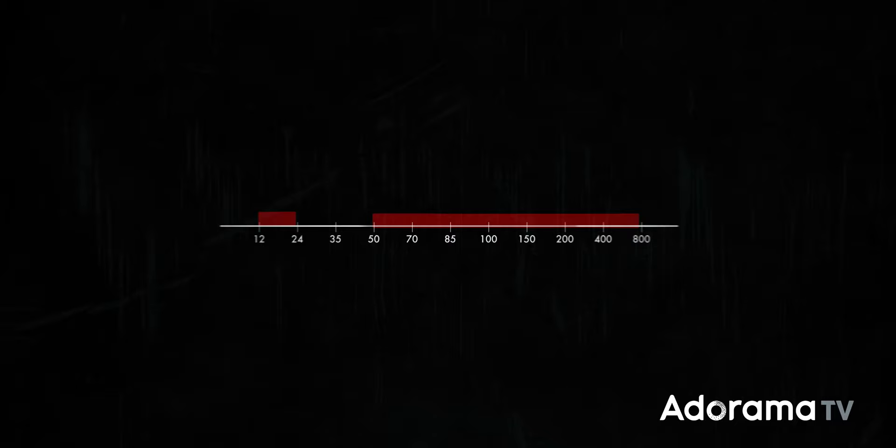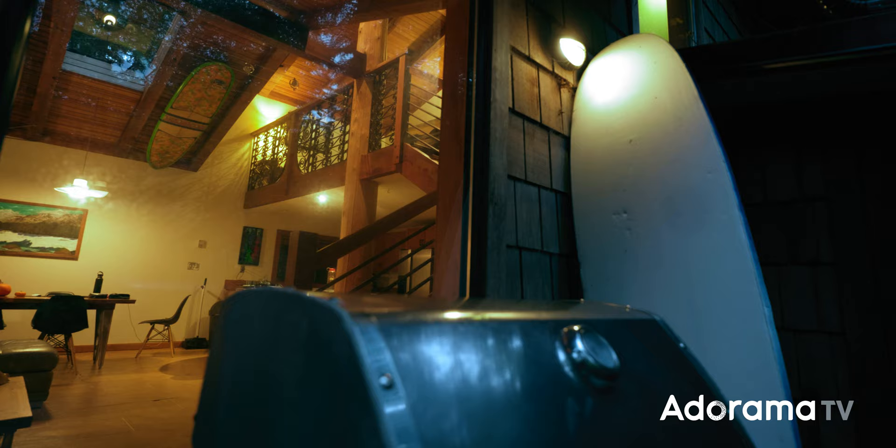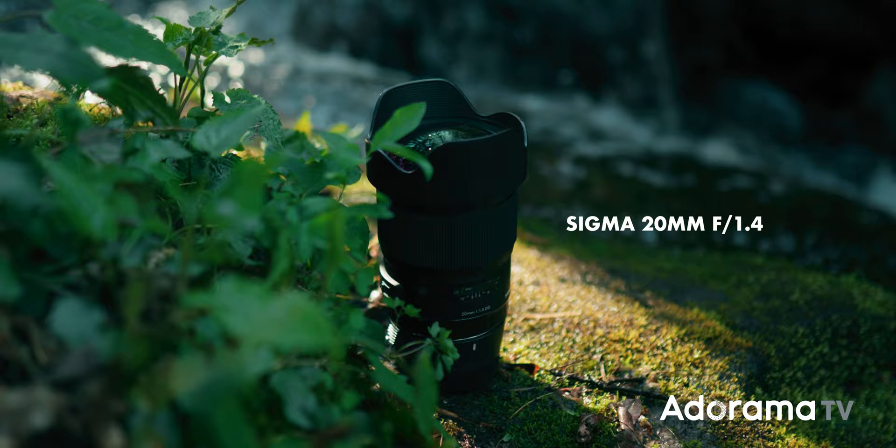Ultrawide lenses distort geometry and exaggerate scale and motion, so they can be used to create images that feel claustrophobic or expansive and euphoric. My personal favorites that I use all the time are my Sigma 16-28 f2.8, 14mm f1.8, and 20mm f1.4.